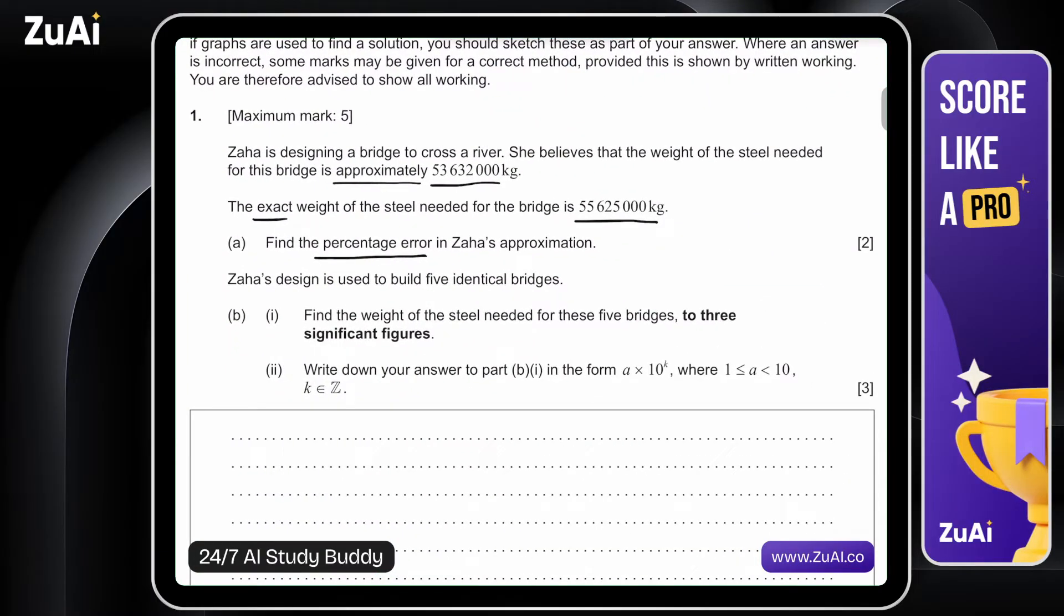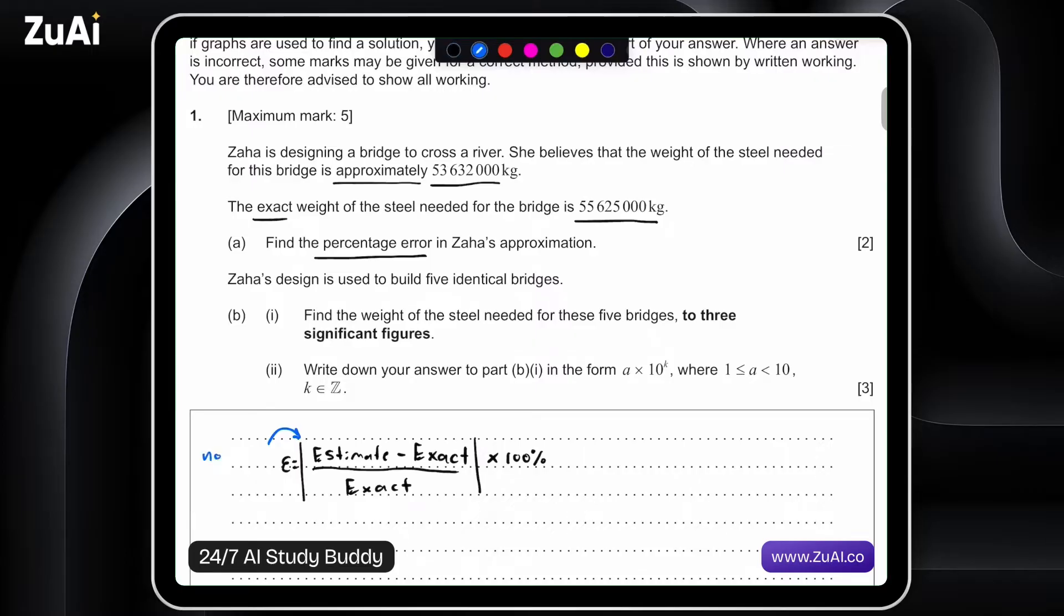So let's go ahead and write that here. Write it out in words, and then we'll input those values. So here we are. Percentage error is the estimate minus the exact over the exact value. And then we want to represent this as a percentage. And these long lines right here are absolute values. These long lines here are absolute values, and what that means is we don't want any negatives. That's what that's saying.